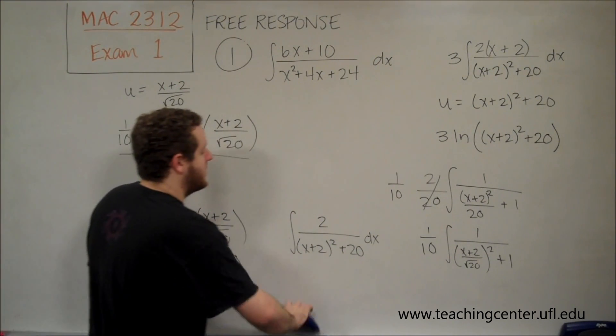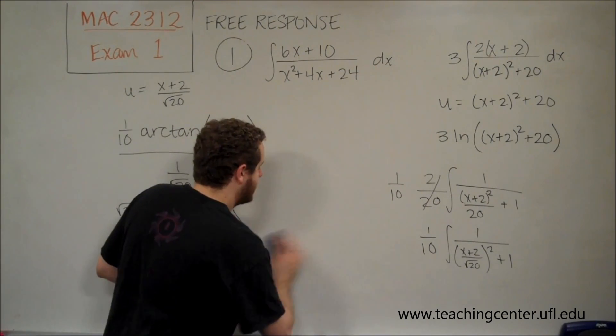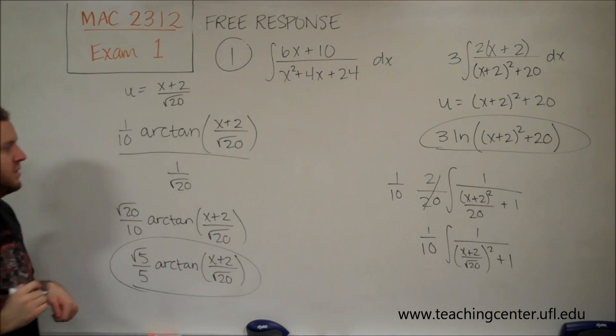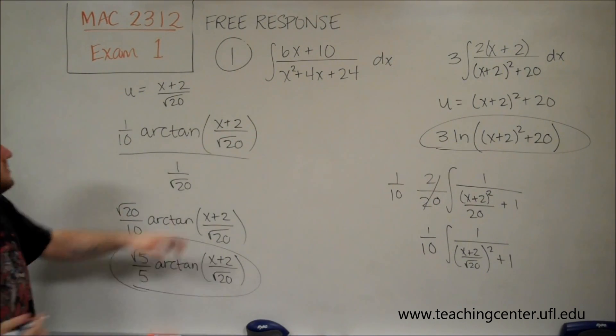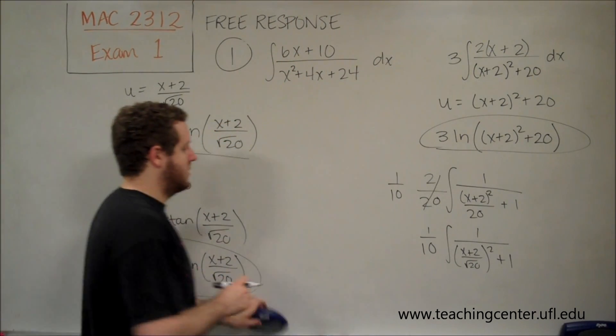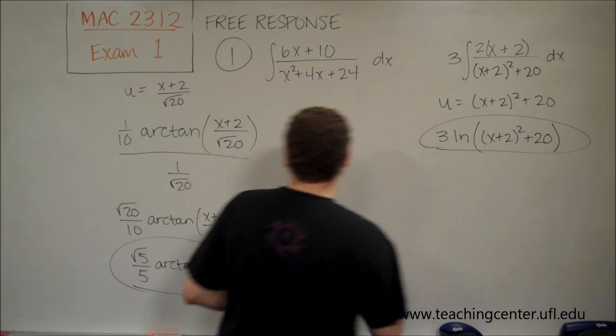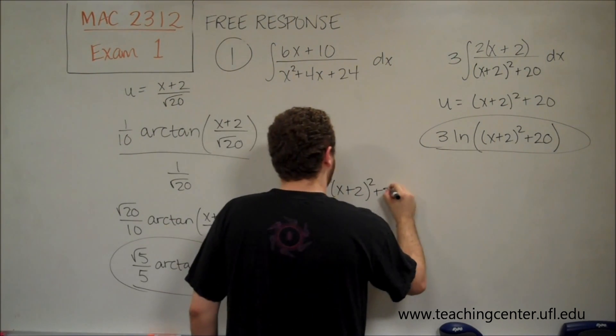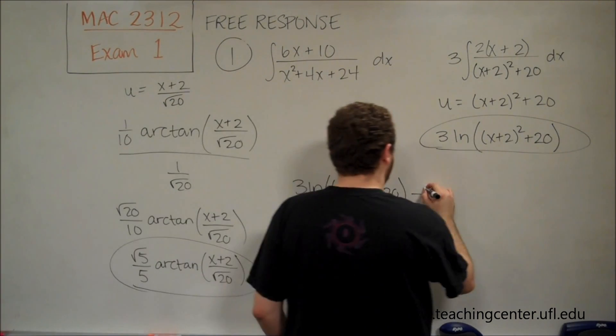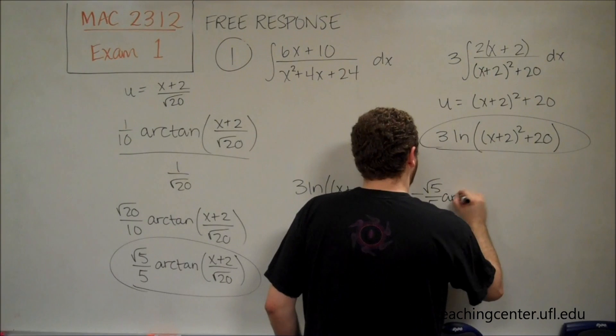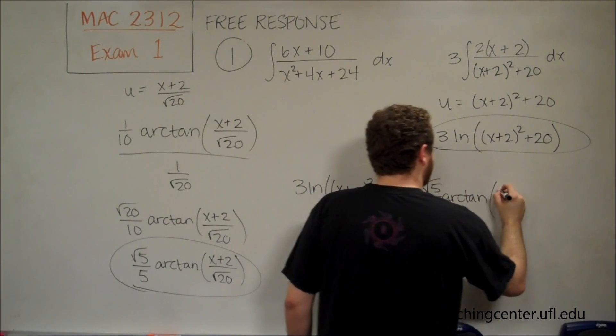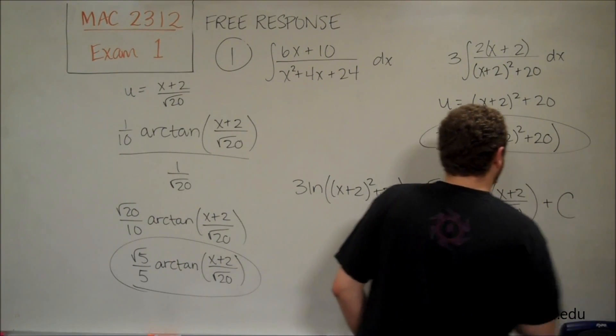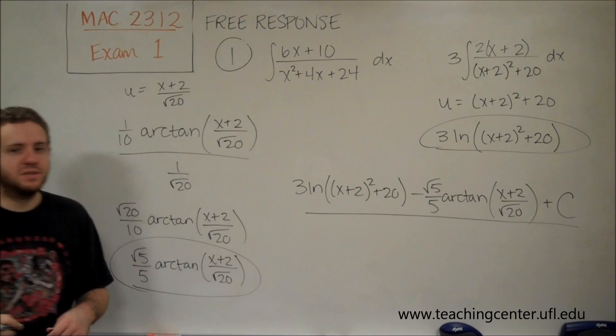arctangent of x plus 2 over square root of 20. So that was the value we got from this. So remember, we had those two integrals and they were subtracted. So from the first one, we got that. And from the second one, we got that. So our answer is going to be that one minus this. And remember, it's going to be plus c because we had an indefinite integral to start with. So let me write our final answer down here. So we're going to have 3 ln of x plus 2 squared plus 20 minus this term down here, root 5 over 5, arctan of x squared plus 2 over root 20 plus our constant of integration c because we had an indefinite integral.